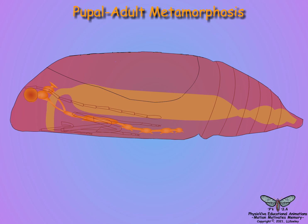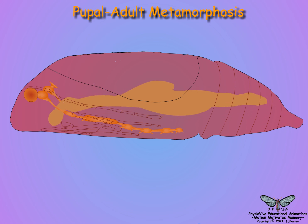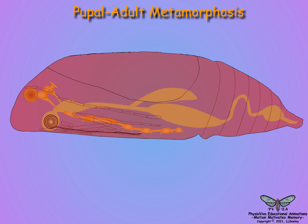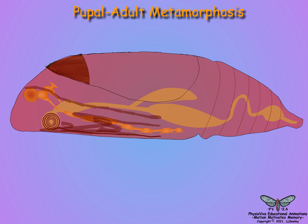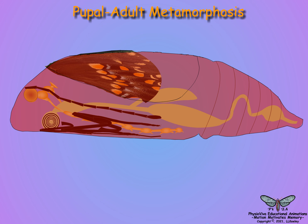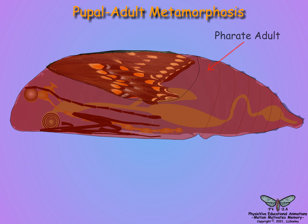Other structures, such as the digestive system, mouthparts, Malpighian tubules, fat body, tracheal system, genitalia, and appendages such as wings, legs, and antennae, also undergo restructuring or de novo formation, along with the outer cuticle to form the fertile adult inside the pupal exuvium prior to eclosion of the mobile reproductive adult.